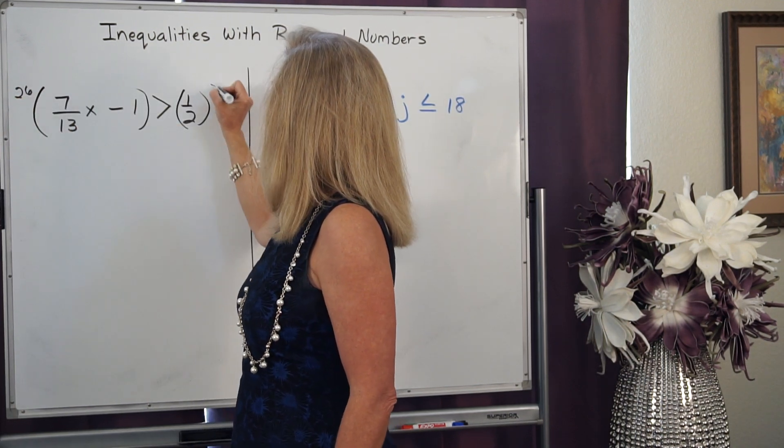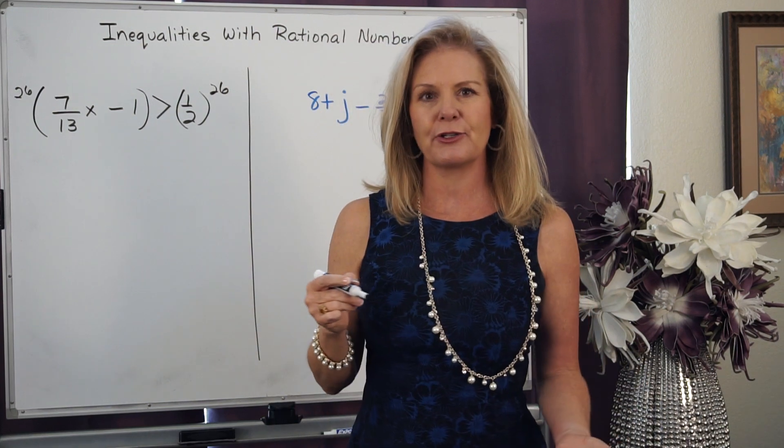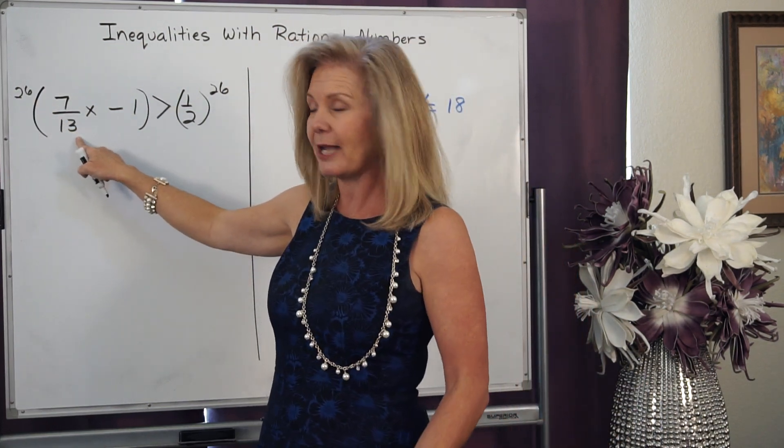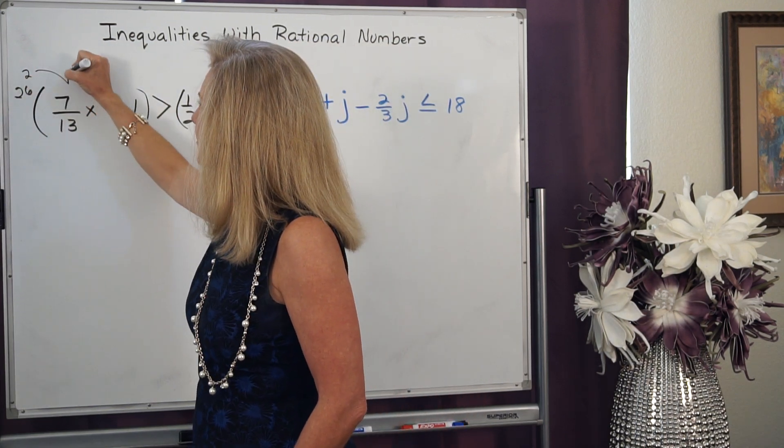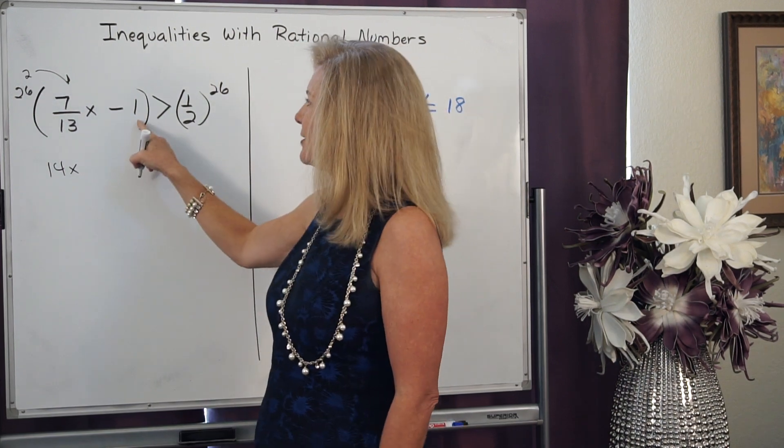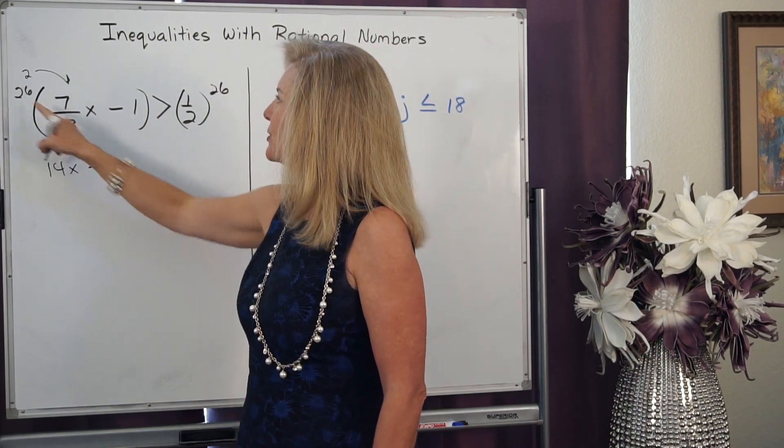And by doing that, I'm going to actually clear those fractions out. Because I know 26 divided by 13 is 2, and 2 times 7 is 14x. But I have to do it with this 2. So 26,